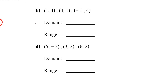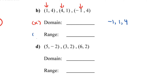For the next set, domain X values are the first numbers: 1, 4, and negative 1. Rearranged from least to greatest: negative 1, 1, 4. For the range, the Y values are 4, 1, and 4. Remove the repeat, and arrange least to greatest: range is 1 comma 4.